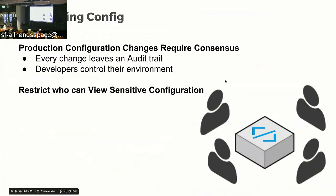Every single production environment change requires someone else to give you a plus one. Every change leaves an audit trail so we know who did what in production — if something goes wrong, we know what happened and can ask why. We also want to give developers as much control as possible over their environment: they can control what instance they pick, how many instances they pick. We don't want to be the ones telling them their website needs more instances — we want to give them the tools to understand what's needed to scale their own services.